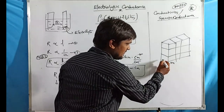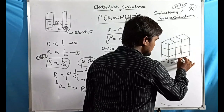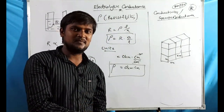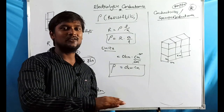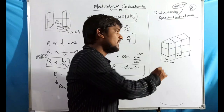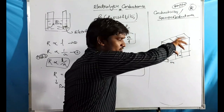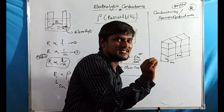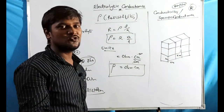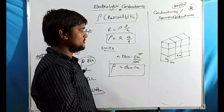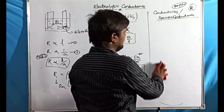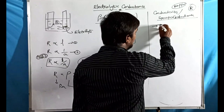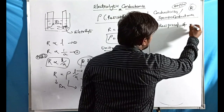Specific conductance refers to the conductance measured for a specific area — imagine a one centimeter by one centimeter by one centimeter cubic volume (1 cm³) of conductor. The conductance measured for that specific area is called specific conductance. Since conductance is the reciprocal of resistance, specific conductance κ is the reciprocal of specific resistance ρ: κ = 1/ρ.